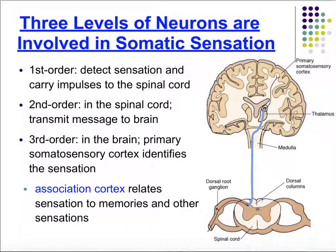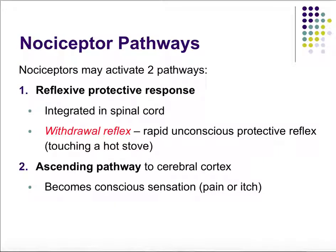Association cortices allow us to relate the sensation to memories as well as other sensations and other things that may be going on at the time. Pain activates nociceptive pathways, and there are two pathways to be aware of: the reflexive protective response and the ascending pathway.